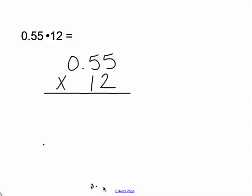So taking it through, 2 times 5, 10, carry the 1, 2 times 5, 10, add the 1, 2 times 0, 0, plus 1 is 1.